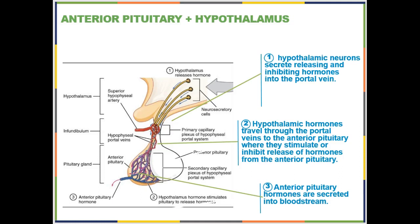Where we stopped, we were just about to start prolactin, but I wanted to review where we were. We are talking about the anterior pituitary. This is the structure that is a traditional endocrine tissue, however it works with the hypothalamus. As we go through all of the anterior pituitary hormones, the hypothalamus is actually the beginning of each story. So with each anterior pituitary hormone, you need to first consider how the hypothalamus controls its release.